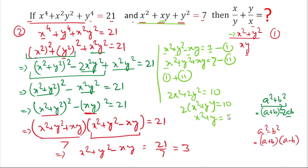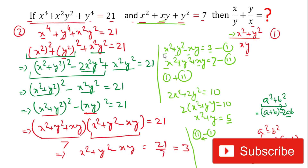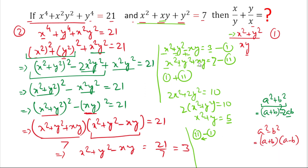Taking 2 as common: 2(x² + y²) = 10, so x² + y² = 5. Now subtracting Equation 1 from Equation 2: the x² and y² terms cancel, leaving 2xy = 7 - 3 = 4, so xy = 2. We now have x² + y² = 5 and xy = 2. Substituting into our expression: (x² + y²) / xy = 5/2.